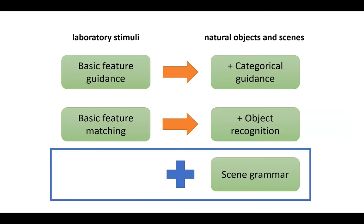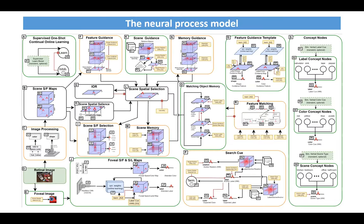We propose a new neural process account to handle scene grammar in our model. These are the key ingredients needed to move from a model that handles neural processes for visual search to extend it to also work on natural objects, scenes, and categories. This is the picture of the complete neural process model — it is at first glance a large and complex model, and no one is expected to understand it completely at first glance. But since the same model solves many different cognitive processes simultaneously, it is strongly constrained because each building block is theoretically constrained.